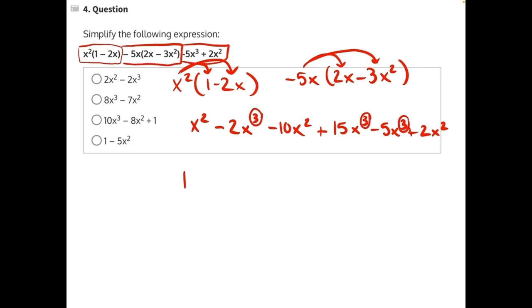So you can grab all of your highest powers, 15x cubed minus 2x cubed minus 5x cubed, and then grab all of your next highest powers, the rest of the squares, minus 10x squared plus x squared plus 2x squared.